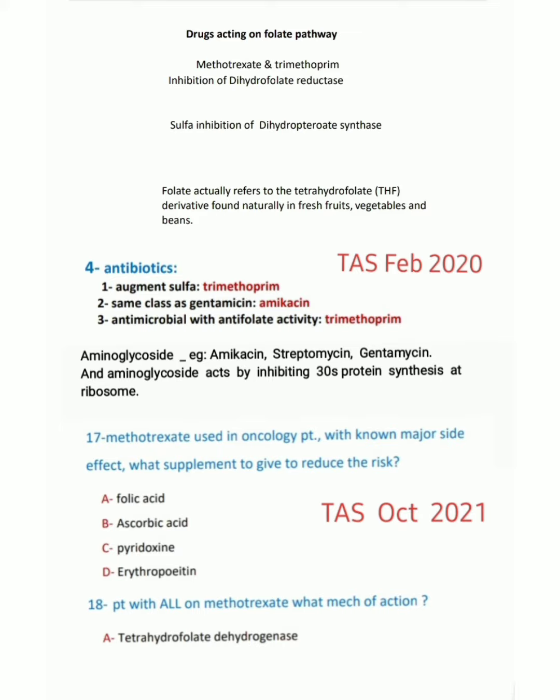Next question: what drug is the same class as gentamicin? The answer is amikacin. Note that aminoglycosides — examples include amikacin, streptomycin, and gentamicin — act by inhibiting 30S protein synthesis at the ribosome.